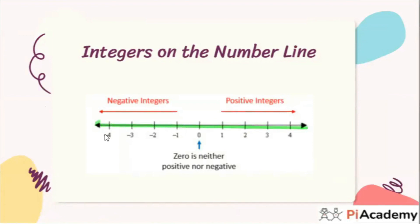On the number line, on the left side you have all the negative numbers, on the right side you have all the positive numbers, and at the center you have zero. Zero is neither positive nor negative. Left side is the negative side, right side is the positive side, and the center is neutral. All these three things - positive numbers, negative numbers, and zero - come under integers.